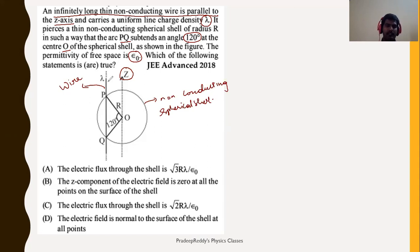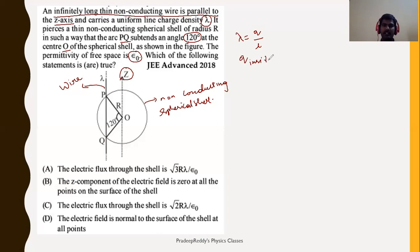A thin conducting wire is piercing this spherical shell, making two holes through which the wire passes — it has linear charge density lambda. This is a non-conducting spherical shell where PQ subtends an angle of 120 degrees. As we know, lambda equals q divided by l, so the charge inside the shell equals lambda times the length of wire inside the shell, which we need to find.